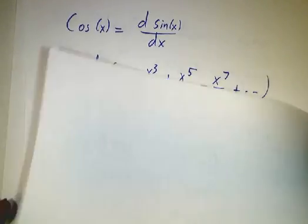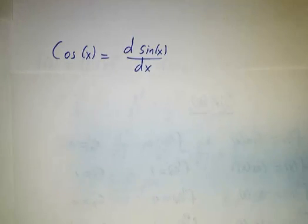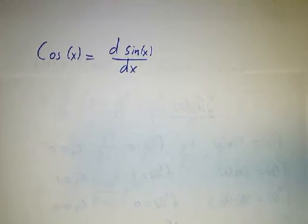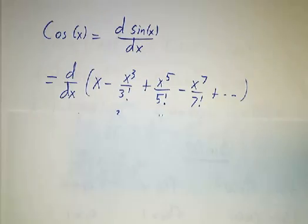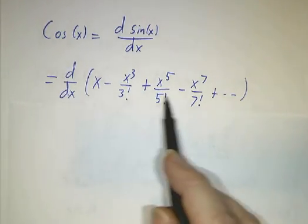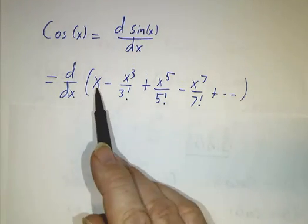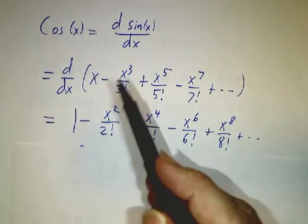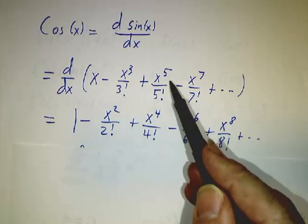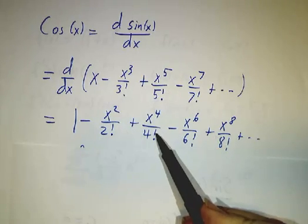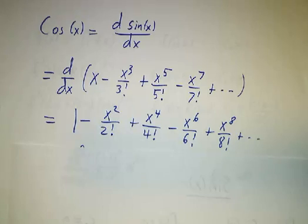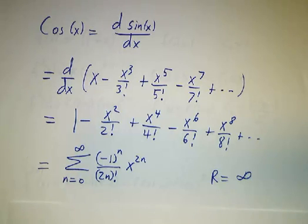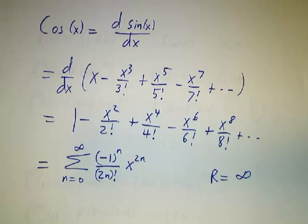If you want the series for cosine, you could do the same process — computing the derivative of cosine, derivative of derivative, and so on. But it's easier to note that cosine is the derivative of sine, so just take the derivative of the sine series term by term. The derivative of x is 1; the derivative of x cubed over 6 is x squared over 2; the derivative of x to the fifth over 5 factorial is x to the fourth over 4 factorial; the derivative of x to the seventh over 7 factorial is x to the sixth over 6 factorial. That gives us the series for cosine, and again the radius of convergence is infinite.